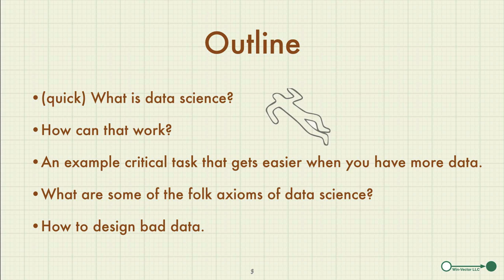The outline of this talk is as follows. I'm going to give a really quick definition of data science. Then I'll outline how a science defined as such couldn't even work. I'll then give an example of a critical task that becomes easier when you have more data. I will then outline some of the folk axioms of data science, and show how I designed bad data sets that serve as counter-examples to these folk axioms in the limit.